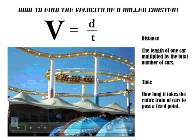Count how many cars there are, and then you multiply those numbers to get the total length of the train. Once you have your distance and your time, you're able to very easily divide those and you'll get your velocity.